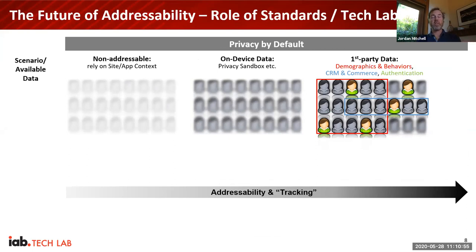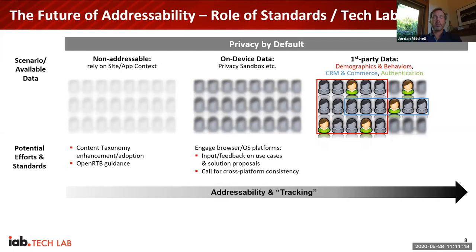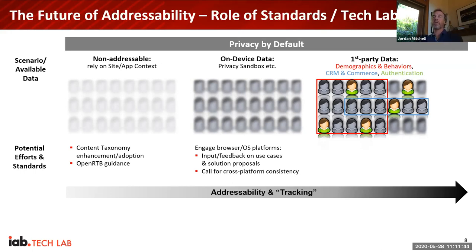IAB Tech Lab focuses on global industry standards. This is where we have to come together as an industry and figure out where those standards exist to fuel the innovation that we all want. On the non-addressable front, we have a content taxonomy for standardized ways for publishers to describe their page and app context, which provides scale for buying. Within the Privacy Sandbox, we're encouraging cross-platform consistency and looking to W3C to ensure the web keeps moving forward on open standards.